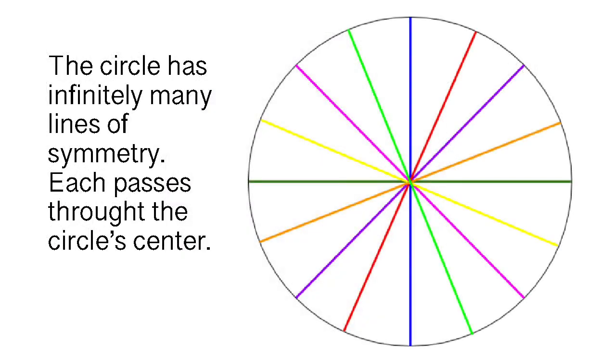The circle is the only two-dimensional shape that has infinitely many different lines of symmetry.